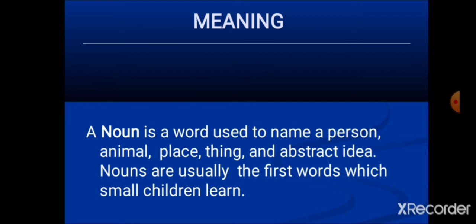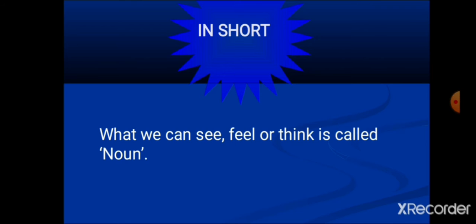Now, children, you will be thinking about abstract ideas. What happens when we have an emotion which we can only feel but not touch? For example, we can only feel happiness — we cannot touch it. In short, what we can see, feel, or think is called a noun. If we ask about the definition of noun in short terms, nouns are the words which we can see, feel, or think.